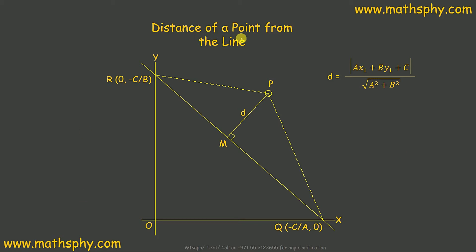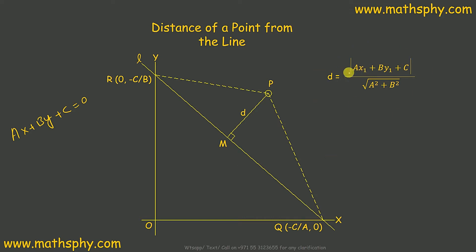This topic is the distance of a point from a line. We have point P and a line in the format ax + by + c = 0. The distance of point P from this line, let's call it d or PM, has a direct formula: d equals modulus of (ax1 + by1 + c) over square root of (a² + b²). We need to study how this formula has been derived.